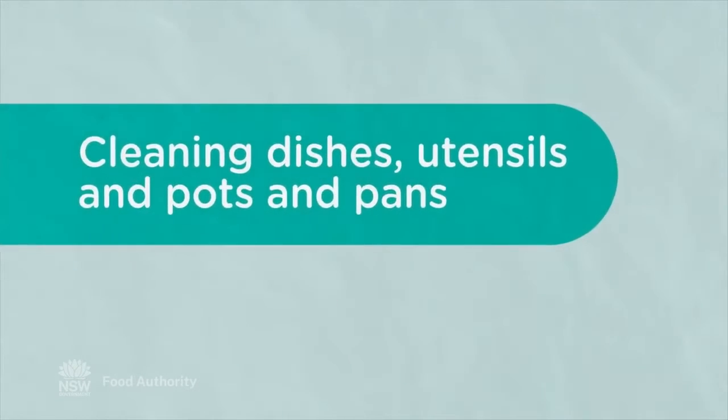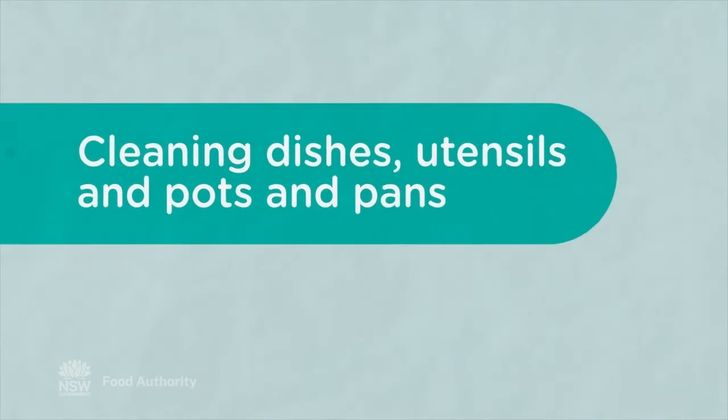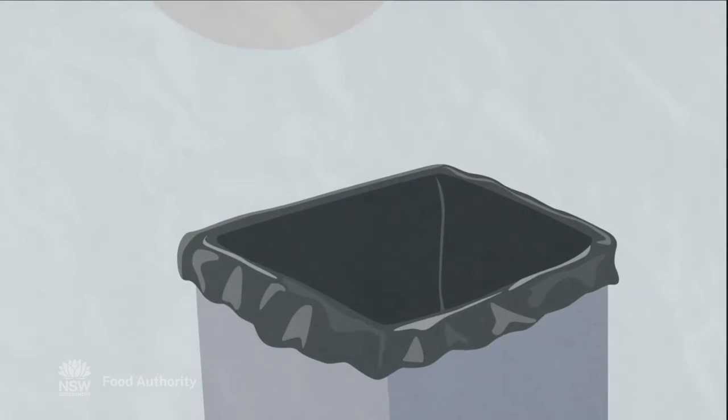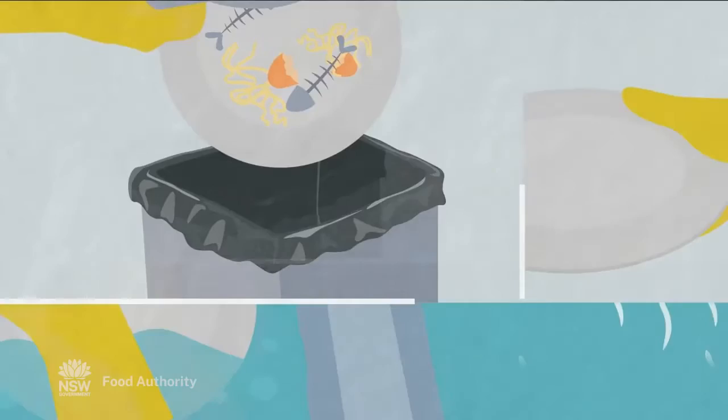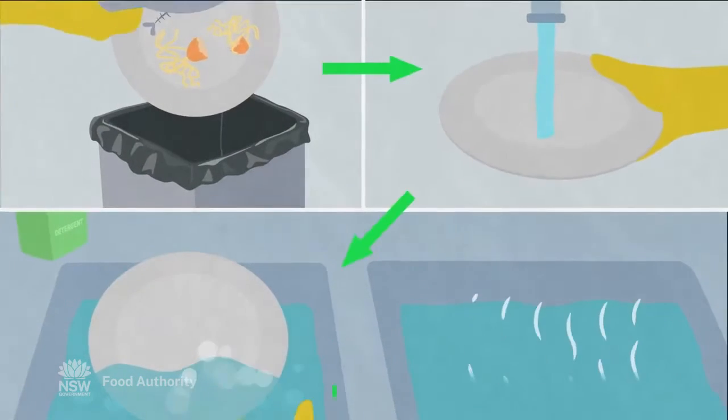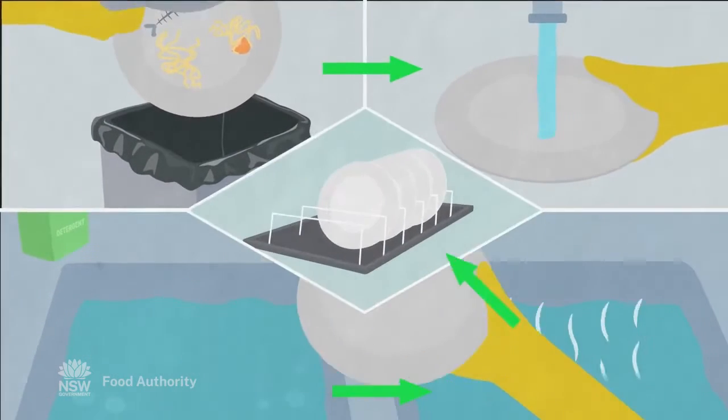For cleaning dishes, utensils, pots and pans by hand, pre-clean by scraping and rinsing. Wash in hot water and detergent. Rinse, sanitise, then air dry if possible.